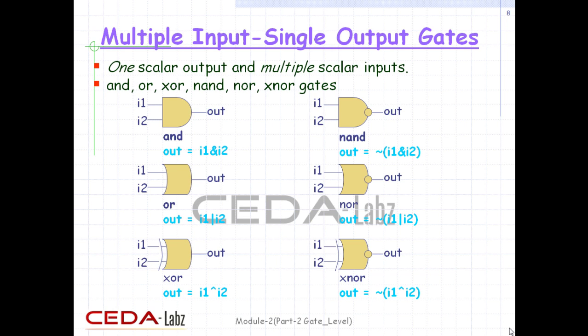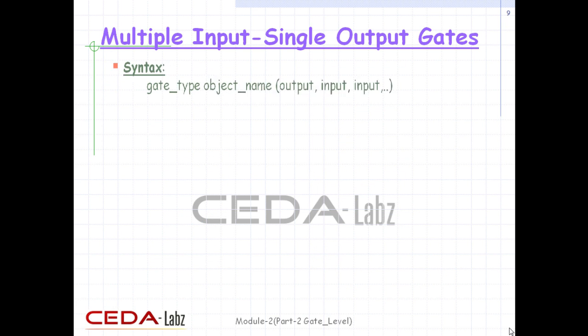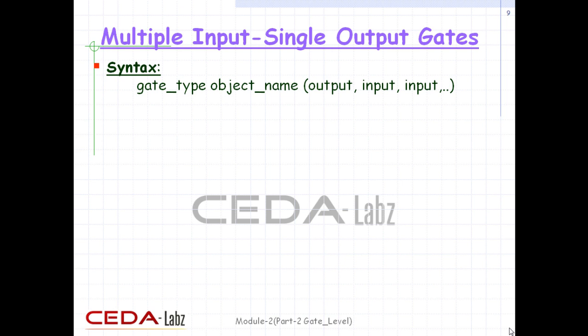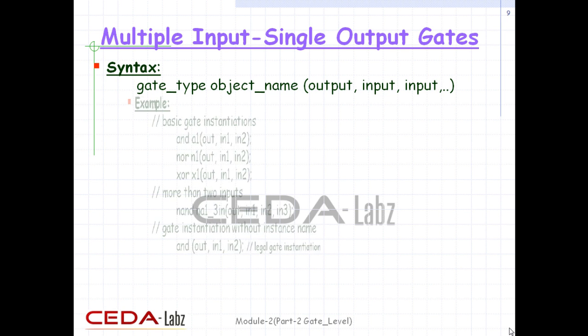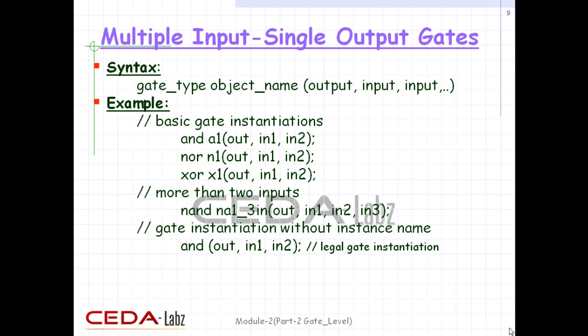We consider gates with two inputs. The output terminal is denoted by OUT, and input terminals are denoted by I1 and I2. These gates are instantiated to build logic circuits in Verilog. The syntax for instantiating a gate is: gate type or gate name, followed by instance name with enclosed brackets containing the port list. Gates with more than two inputs are instantiated by simply adding more input ports. Verilog automatically instantiates the appropriate gate. Note that instance name does not need to be specified for primitives, but it is good practice to use an instance name.